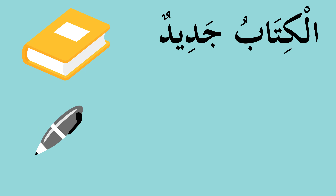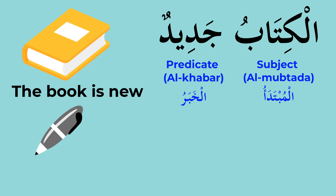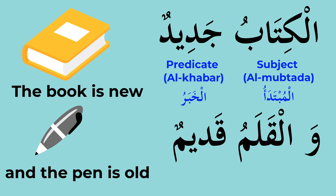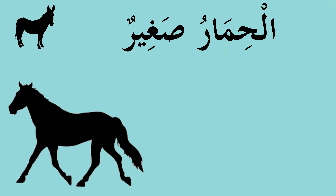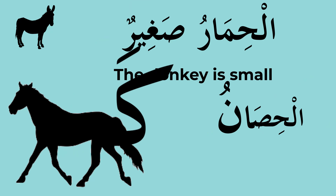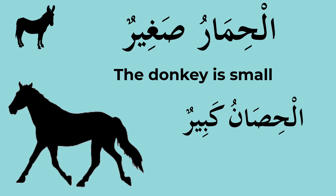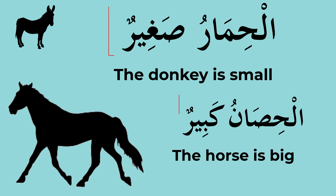Al-kitabu jadeedun — 'The book is new.' Al-kitabu is the Mubtada, jadeedun is the Khabar. Wal-qalamu qadimun — 'And the pen is old.' Al-hemaru sagheerun — 'The donkey is small.' Wal-hisaanu kabirun — 'And the horse is big.' You can see the Khabar is indefinite every time.